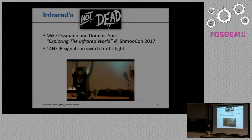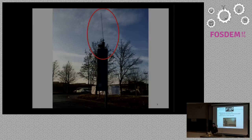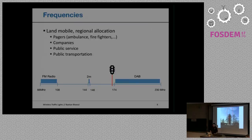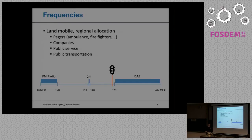Just very recently, Mike Osman and Dominic Spill looked at traffic lights with infrared. Today, we want to look at this big antenna — and as you might guess, that doesn't look like GSM. For the GSM uplink, they maybe didn't put this antenna on the traffic light. One friend of mine said whenever he's close to these traffic lights, his DAB — his digital audio radio — just stops working. So I thought, let's look around in that area.